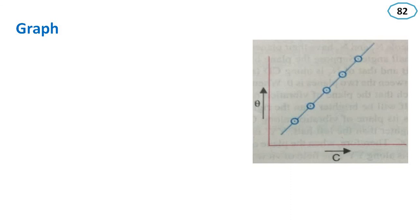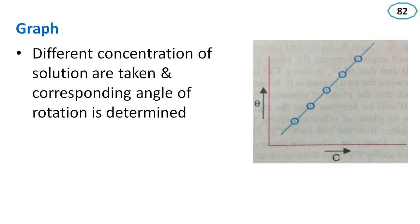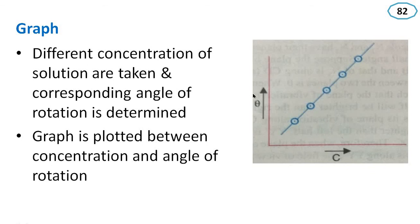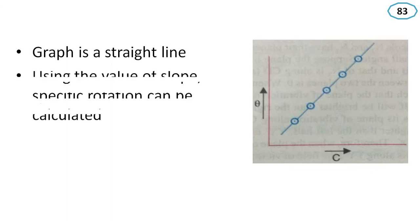Now we can draw a graph. Different concentrations of solution are taken and the corresponding angle of rotation is determined. We measure theta 1, and for each particular concentration we obtain theta 2; theta is the difference of theta 1 and theta 2. A graph is plotted between concentration and angle of rotation. The graph will be a straight line as shown in the figure. By using the slope of this curve, specific rotation can be calculated.